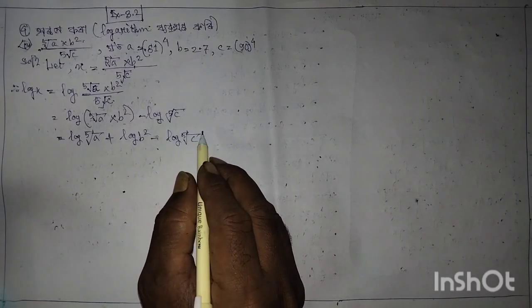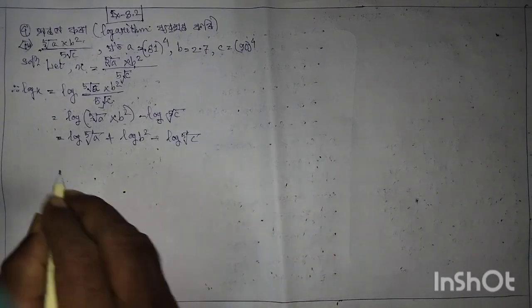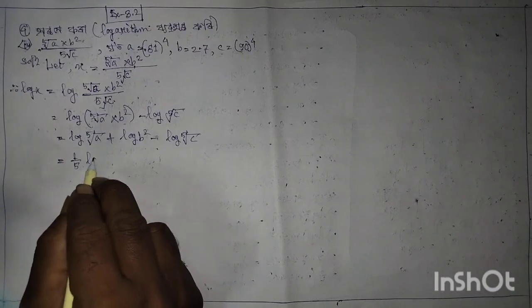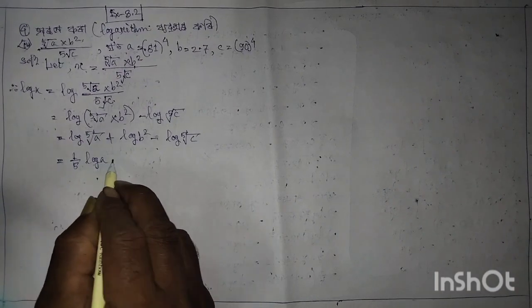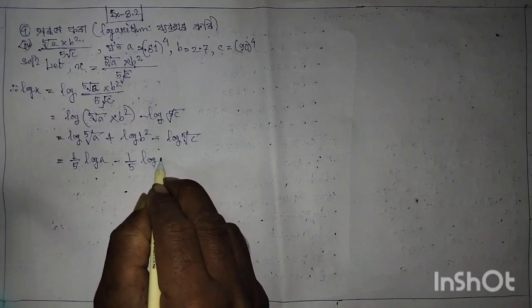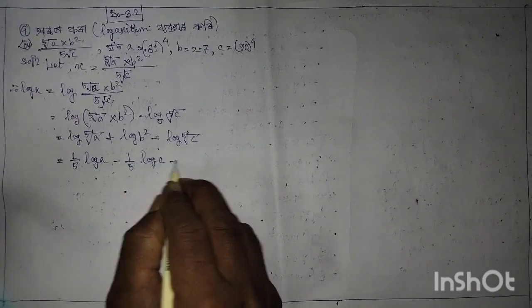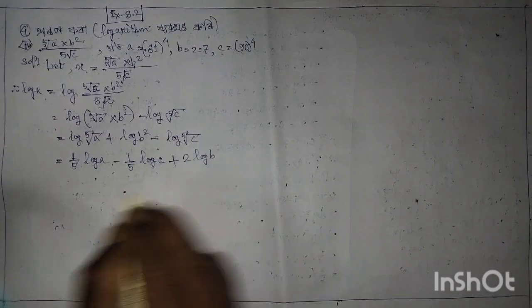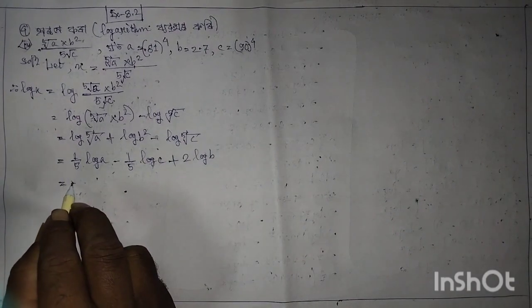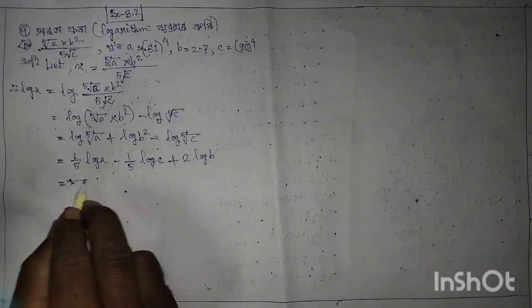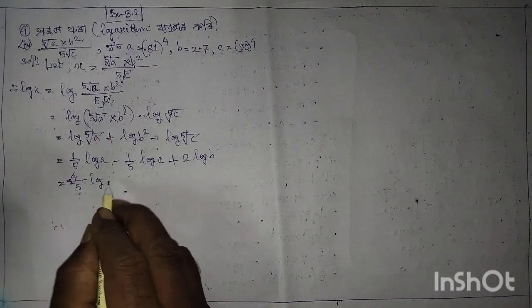0. 1 by 5, log B, minus 1 by 5 log C, plus 2 log B. 0. 4 by 5, log.